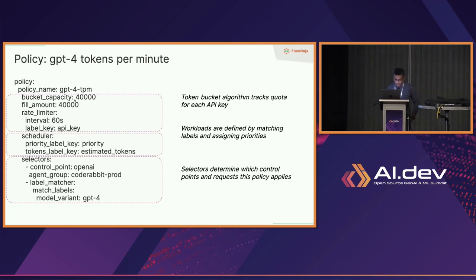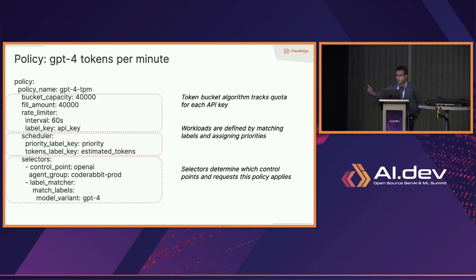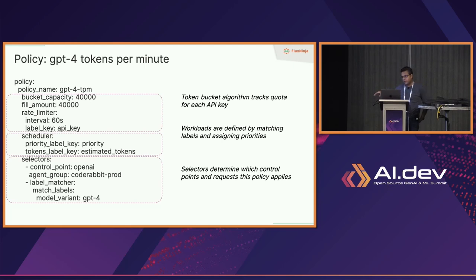You're basically replicating on the client side the token bucket OpenAI runs on their side, so you're completely aligned with the rate of requests you send. Once you do that, you can do prioritization — rather than waiting for OpenAI to reject requests and retrying without prioritization, you regulate traffic from your end with prioritization. The second part is prioritization using a weighted fair queuing scheduler, which needs two factors: the priority of the request and the cost of the request in tokens.